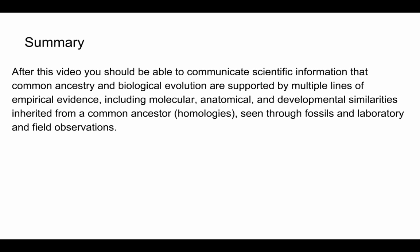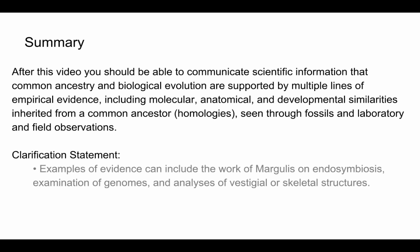In summary, after this video you should be able to communicate that common ancestry and biological evolution are supported by multiple lines of empirical evidence: molecular, anatomical, and developmental similarities inherited from common ancestors — called homologies — as well as fossils, laboratory experiments, and field observations. Specific examples to know include endosymbiosis by Lynn Margulis, genome comparisons, and vestigial or skeletal structures as evidence. I hope that helps, and I'll talk to you again in a future video.